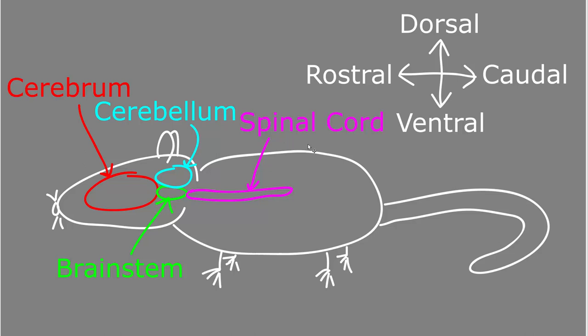In this video, I'm going to talk about anatomic orientation terms. There are a lot of terms when talking about any kind of anatomy, and as we're going to start talking about neuroanatomy, there are a couple of areas in particular that can be quite confusing in regards to the terms.